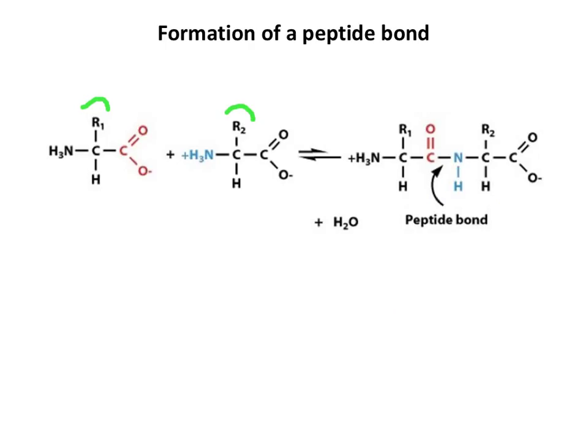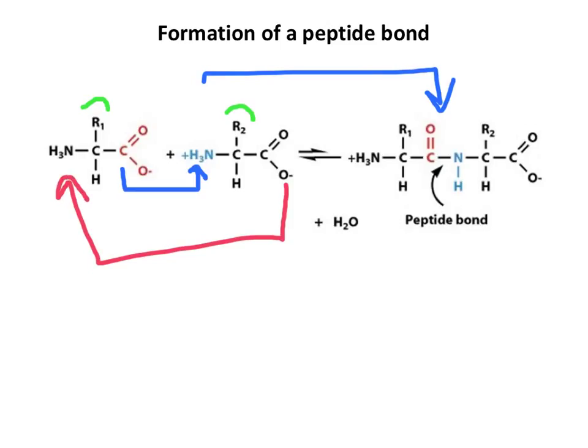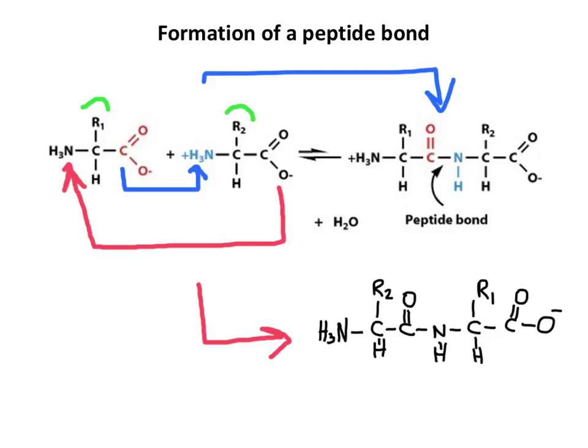The order in which the two ends of amino acids combine is of importance. For example, this carboxylic acid group reacts with the amino end to produce this peptide. If instead, this carboxylic acid group reacts with this amino end, the product is this dipeptide.